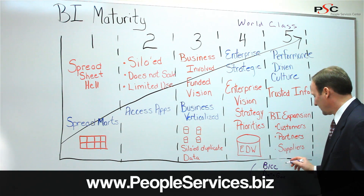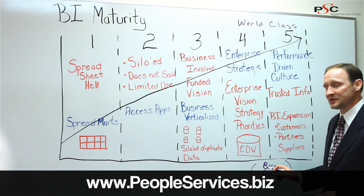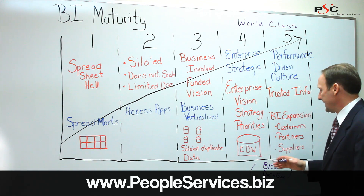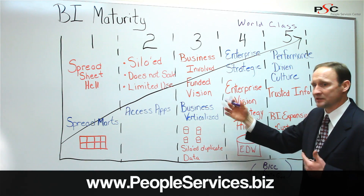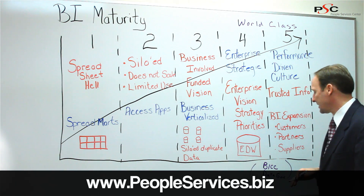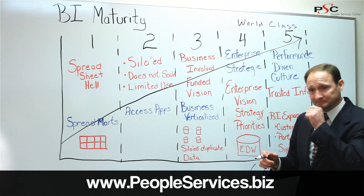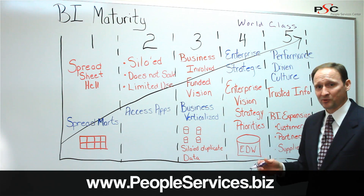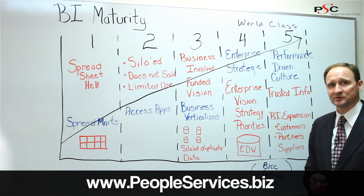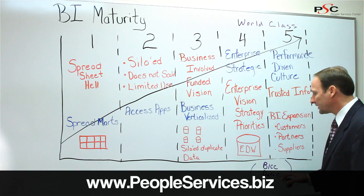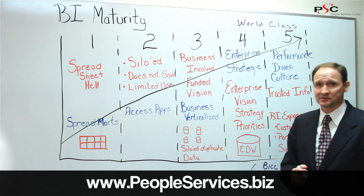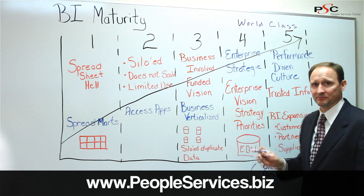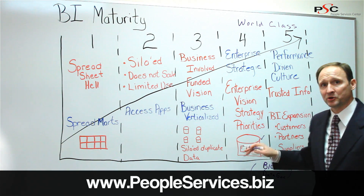We also look at a business intelligence competency center — a group of people that transcend departmental lines and help everyone get on the same page using the right front-end tools and the right data model to support enterprise needs. This group collaborates on priorities, determining which data is most important and which subject matter areas in the data warehouse to deliver first. Data governance also becomes critical, driven by the business side to help clean up data that gets put into the data warehouse.